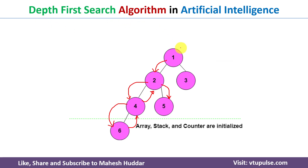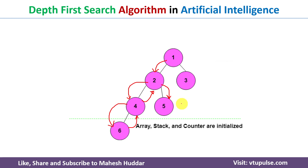The problem with depth-first search is: assume we have a very large tree with n levels and the goal node is on the right subtree. We would need to search the entire left subtree down to the last level, then traverse right to reach the goal node. This takes a lot of time, and the path length found is not optimal — it will be very long.